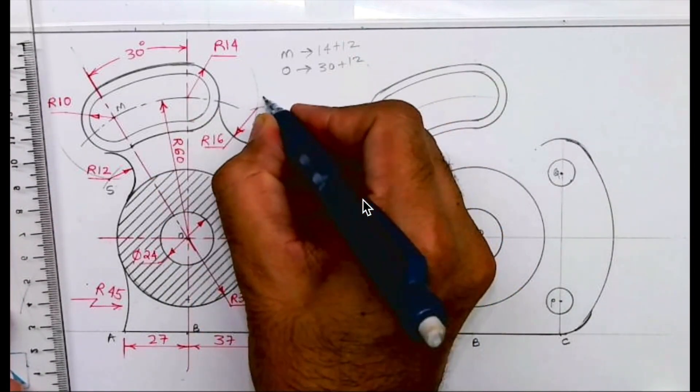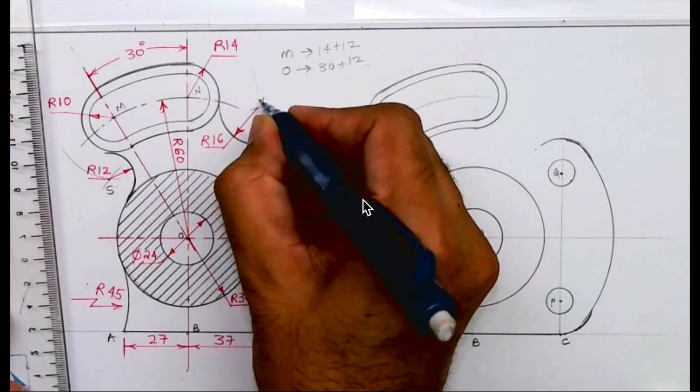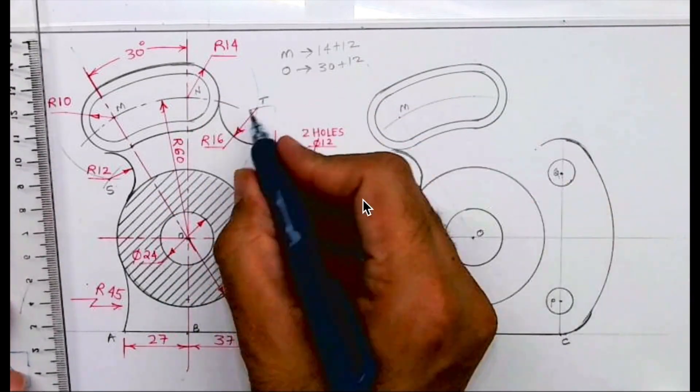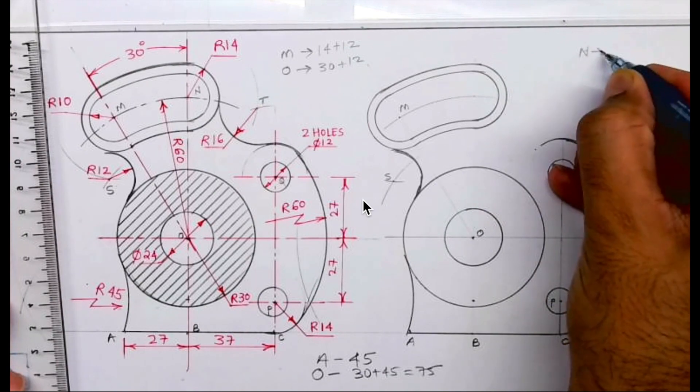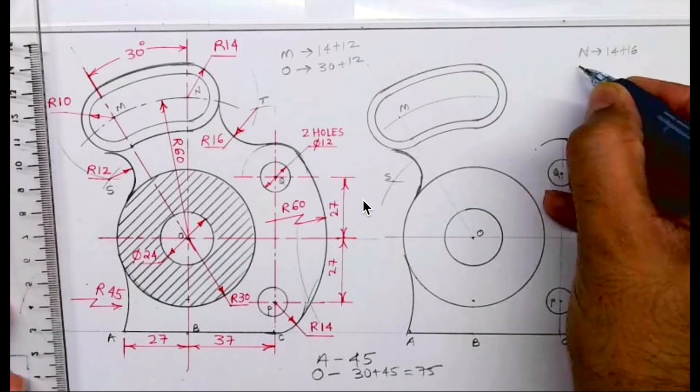Radius 16 is external to this. From N we cut 14 plus 16, and from Q we cut 14 plus 16. Wherever they intersect, that is point T.